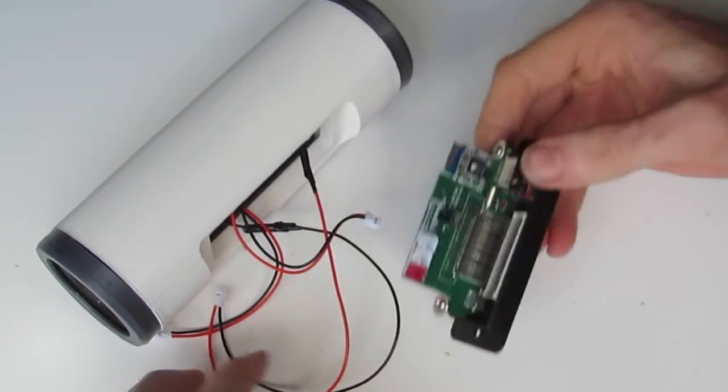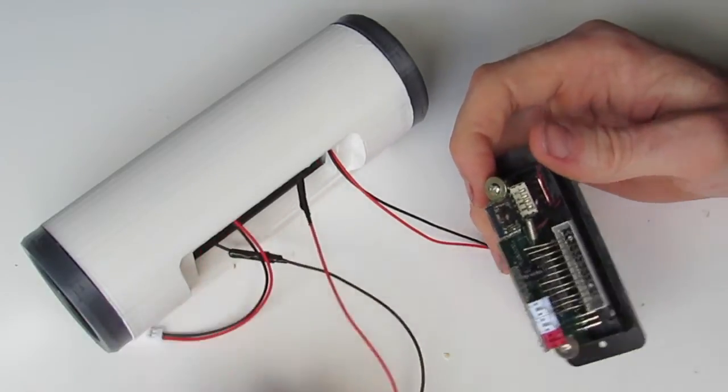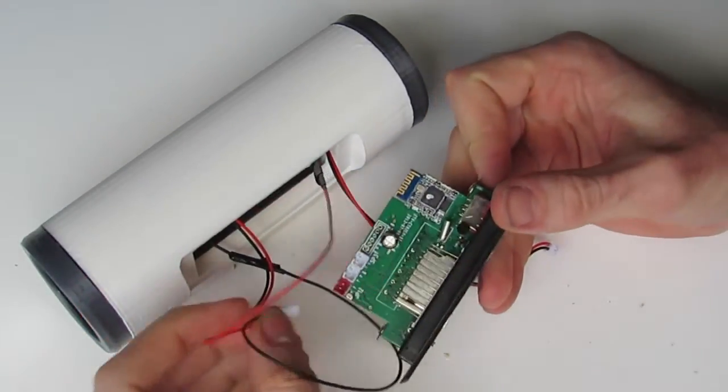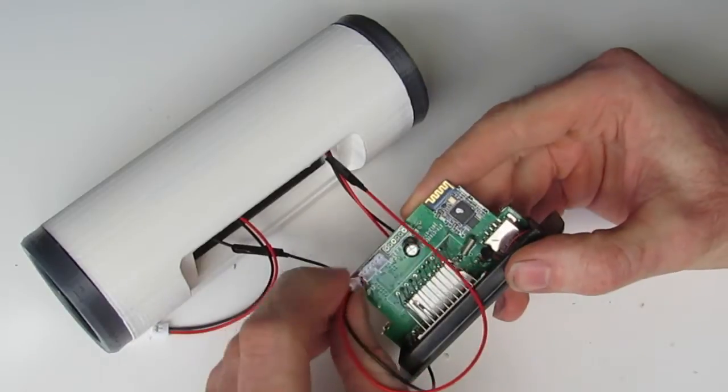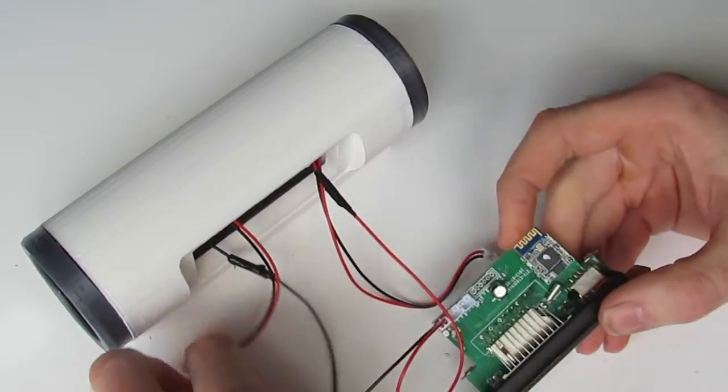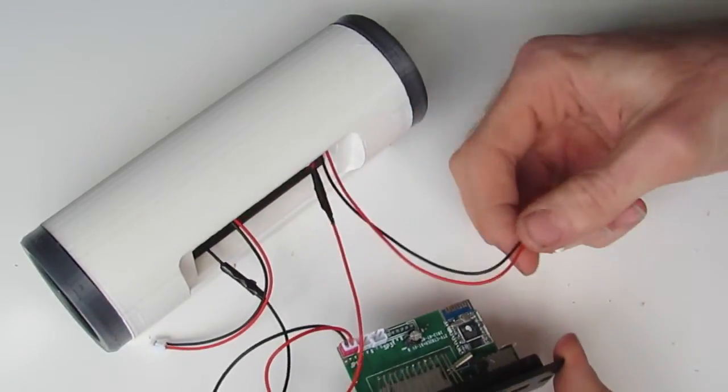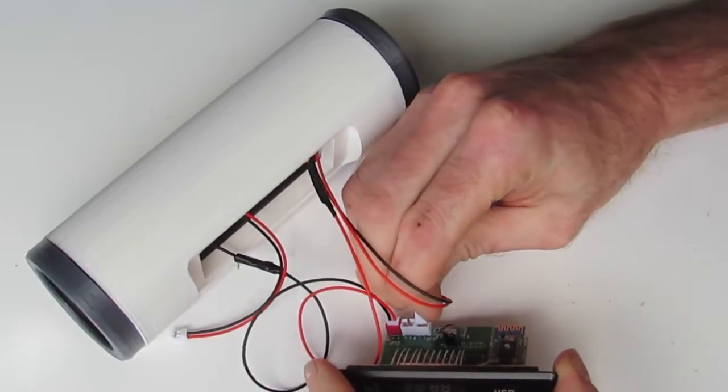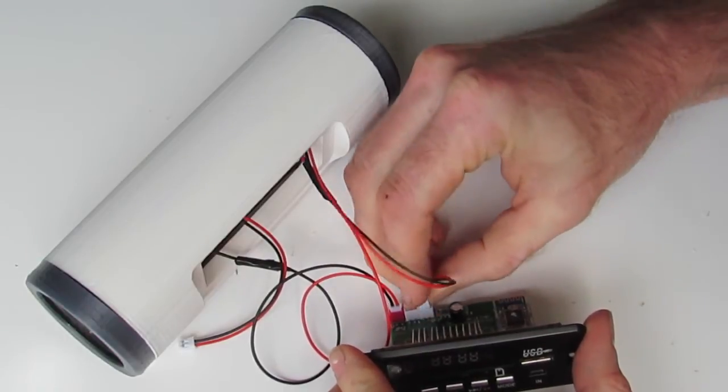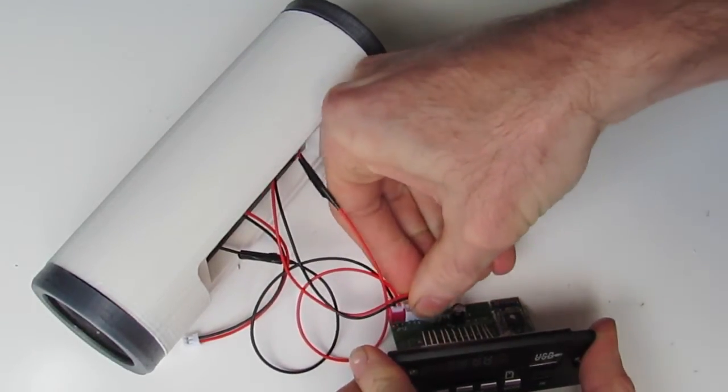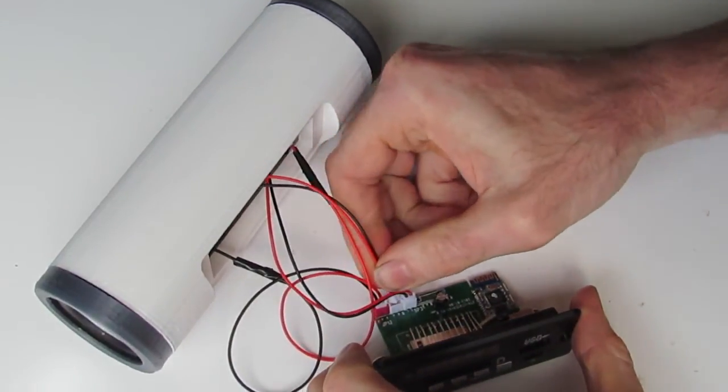Next, we want to take our main module and connect everything together. Just taking note of which wires are coming from where. So our battery wire goes into this end red connector on the circuit board. Clip that in place. Our right hand speaker clips into this one. And lastly, our left hand speaker into that one.